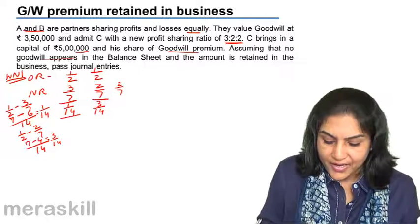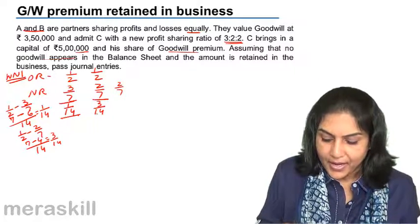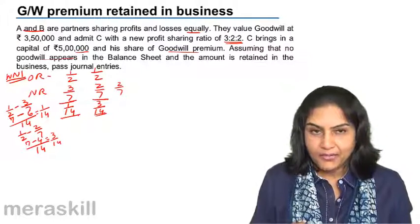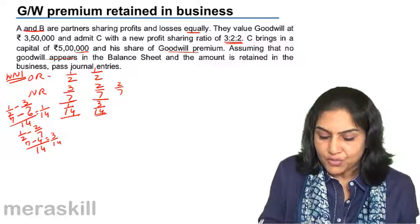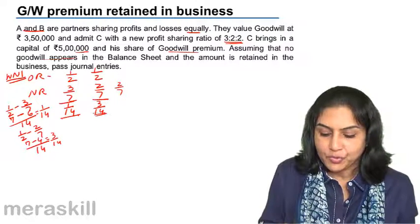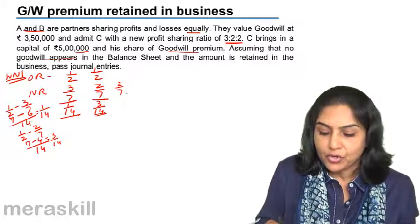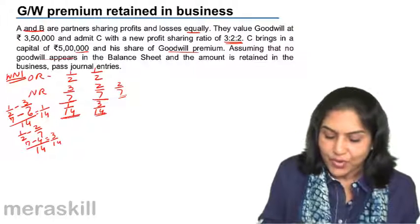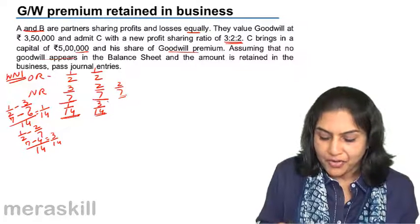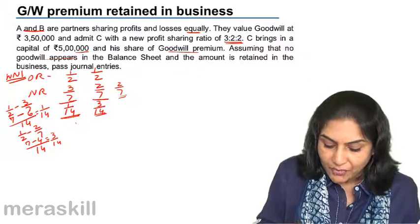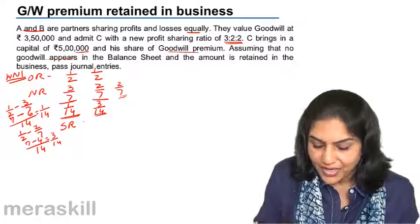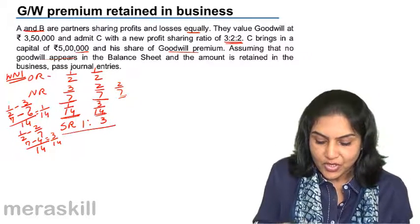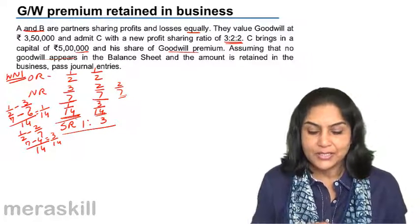So the sacrifice made by A is 1/14 and by B is 3/14. Notice that 1/14 plus 3/14 equals 4/14, which is 2/7 — that is C's share. Therefore the sacrificing ratio is 1:3.